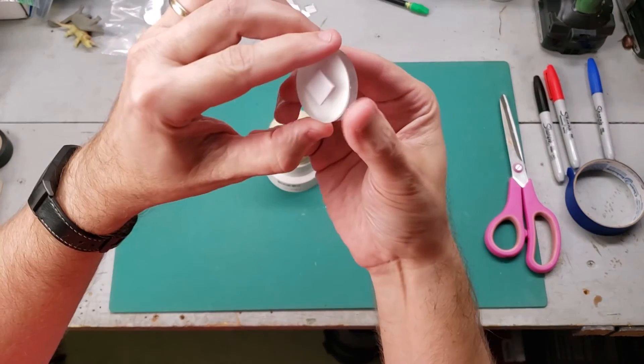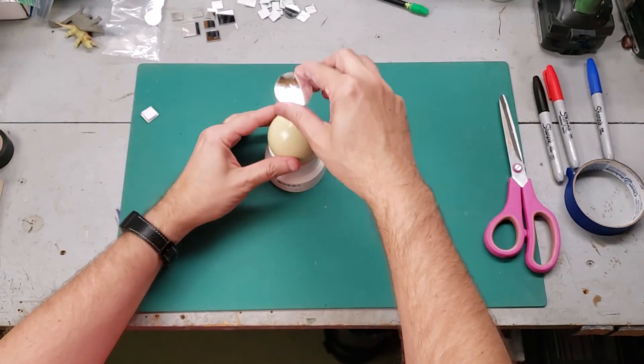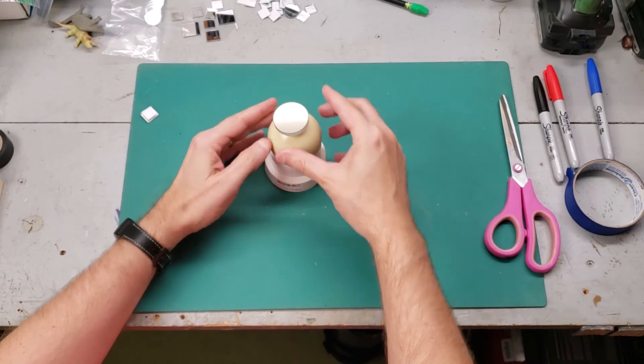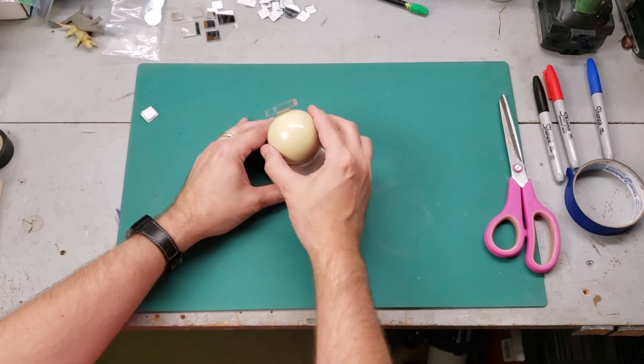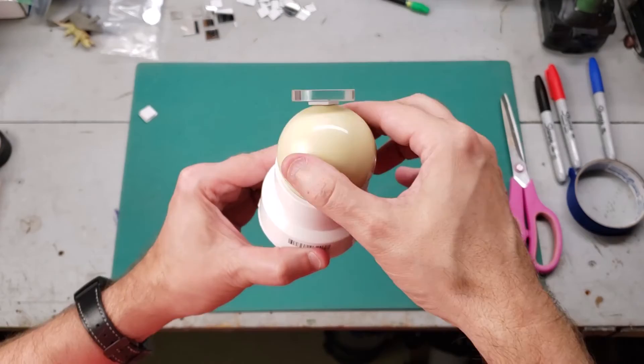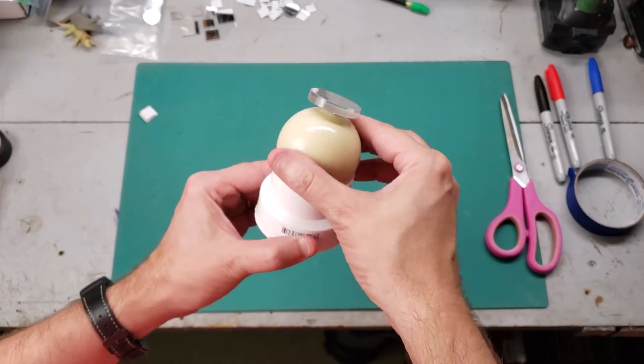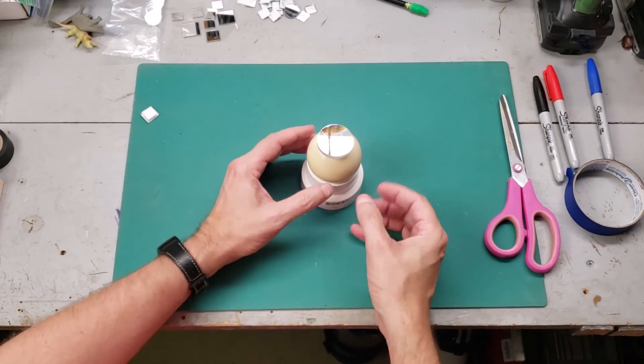So, you take your mirror, put your double-sided tape on it, stick it right on that cue ball. You can aim it in any direction you want. Look at that. Works really well. Now, there's only one problem. This particular mirror is way too big.